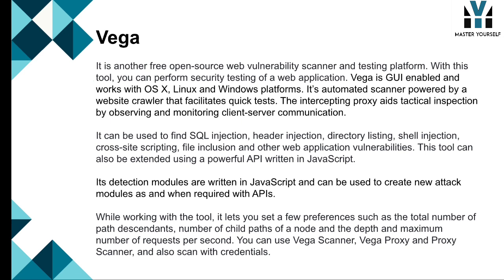While working with Vega, you can set preferences such as the total number of path descendants, number of child paths of a node, depth, and maximum number of requests per second. You can use the Vega scanner, Vega proxy, proxy scanner, and also scan with credentials.